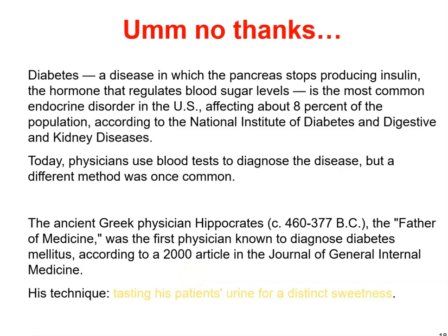Diabetes is a disease in which the pancreas stops producing insulin, the hormone that regulates blood sugar. It is the most common endocrine disorder in the U.S., affecting about eight percent of the population. Interestingly, the ancient Greek physician Hippocrates (463–377 BC), the father of medicine, was the first known to diagnose diabetes mellitus by tasting his patient's urine for distinct sweetness.